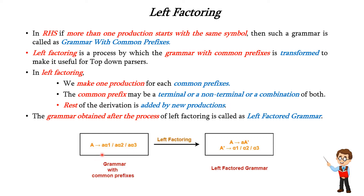The common prefix 'a' is written in a separate production: A → a A'. We introduce a new variable A', and in this new variable we write the rest of the derivation — A' → alpha1 | alpha2 | alpha3. This is the general technique for obtaining a left factored grammar.